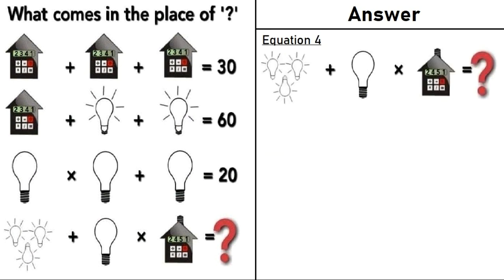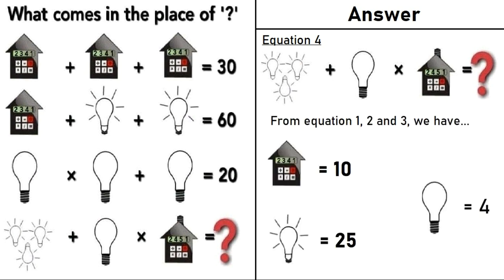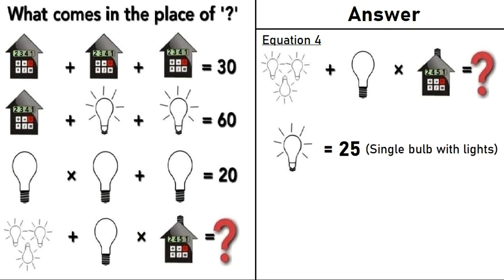Moving on to the last equation which is equation number 4. We have 3 bulbs with light plus a bulb times a house is equal to question mark. From equations 1, 2 and 3, we have a house is equal to 10, bulb with lights is equal to 25. Three bulbs with light is equal to 75.